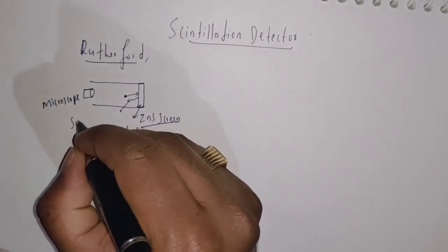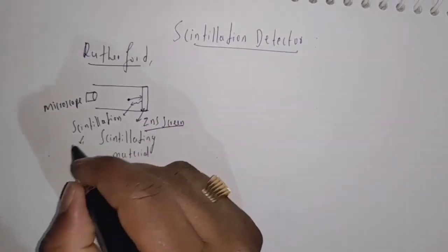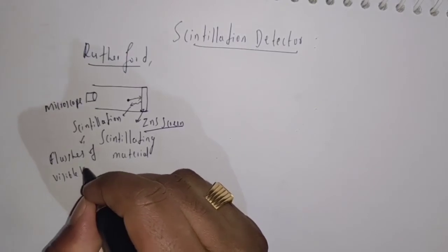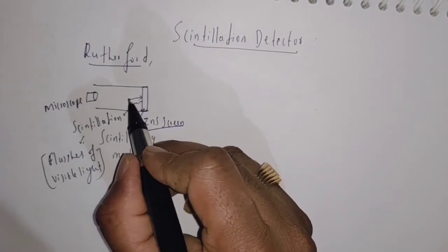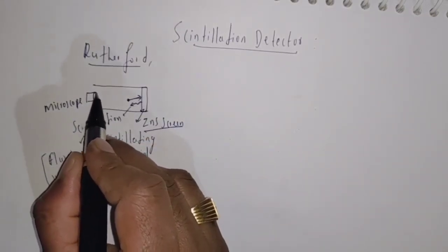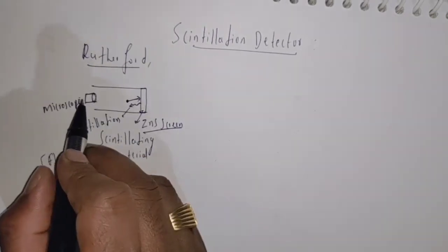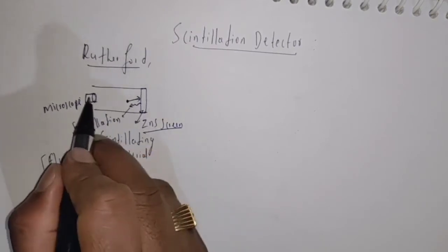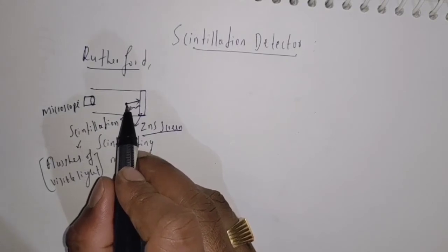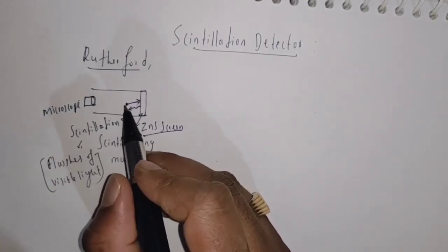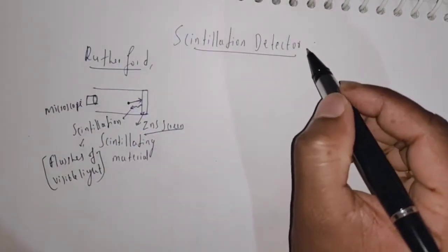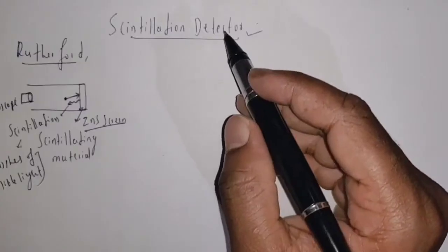When radiation is incident on the scintillating material, we are going to observe a flash of light — that is, we are going to observe scintillation. Scintillation means flashes of visible light. When radiation is incident on the scintillating material, a flash of light is produced, and in the microscope they observe this flash of light. If they observe any flash of light in the microscope, it indicates that a radiation is incident on the scintillating material. However, it is very difficult to observe with the eye and it restricts the counting rate.